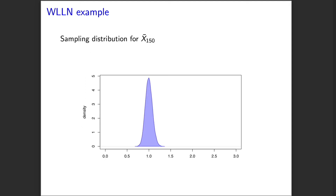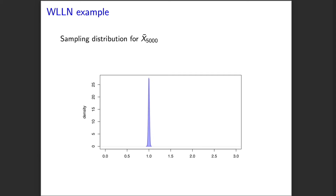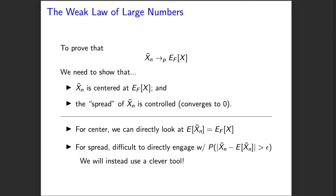Going back, we want to show the center of the sampling distribution is at one, and that as n gets bigger, the spread of that distribution decreases. To understand the center, we can directly look at the expectation of the sample mean — it's straightforward to show that it equals the expectation of any single observation, which is the population mean we're trying to estimate. So that simple calculation shows it's centered in the right place.